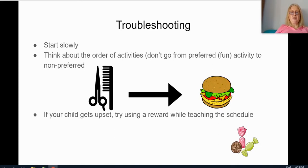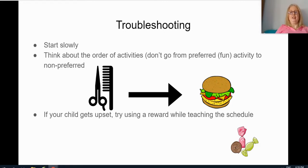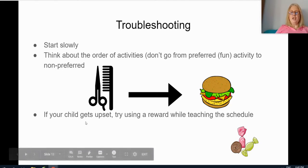Here are a couple of ideas when you're troubleshooting. Start slowly and think about the order of activities. If your child is getting stuck, it may be that you're going from a very highly preferred activity to a non-preferred activity. For instance, 'first hamburger' — which your child loves — 'then haircut,' which they don't love: that would not be a good idea. What you would try to do is have something they don't like followed by something they really do like. And if your child gets upset, you can try using a reward built into the end of the schedule while you're teaching it to them.